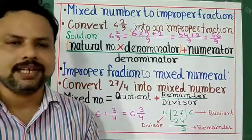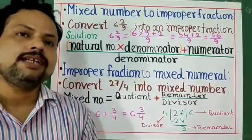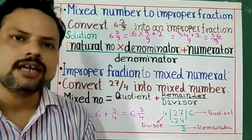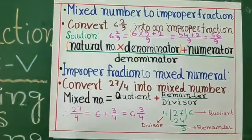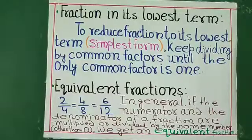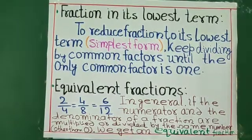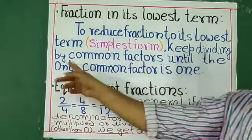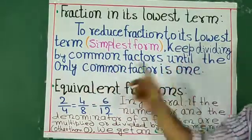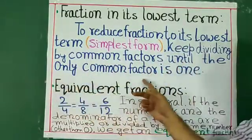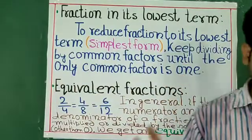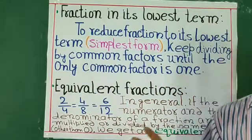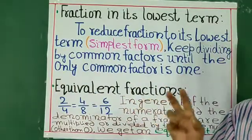Now I will explain how to convert to simplest form or reduce a fraction. Conversion of a fraction into its lowest term or simplest form — just keep dividing by common factors until the only common factor is 1. By reducing we get the simplest form.